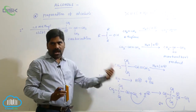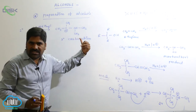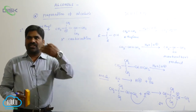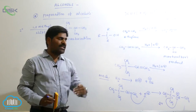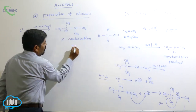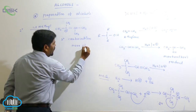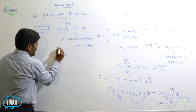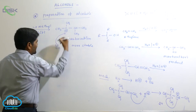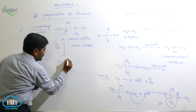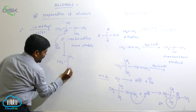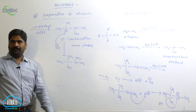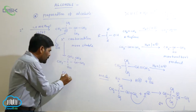Rearrangement takes place from one degree to two degree, and if possible from two degree to three degree carbocation, since three degree is generally more stable. Therefore, OH⁻ is finally added to the tertiary carbocation, giving the major product: CH3-C(OH)(CH3)-CH3.